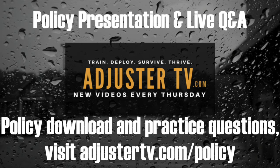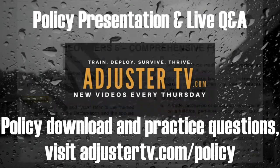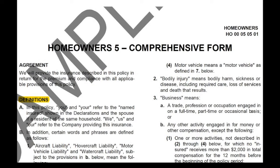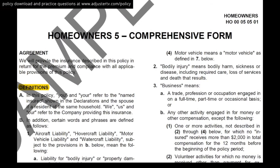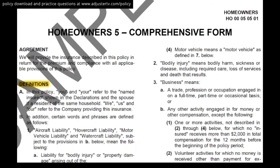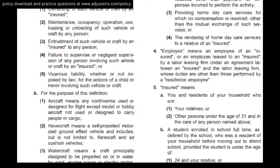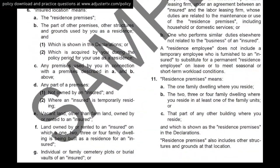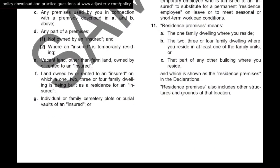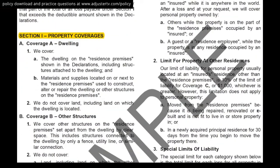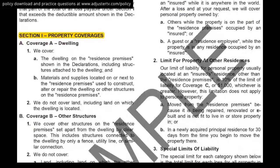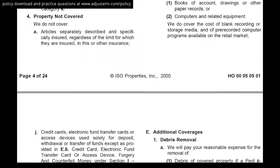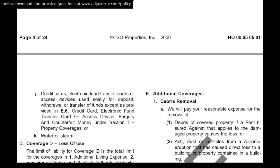Just give me a quick thumbs up in the comments to confirm you can hear and see me. We're going to break down the homeowner's policy and go over just the main parts that will concern you as a cat adjuster. This is the HO5 — a replacement cost policy for the most part. The main parts we'll cover start on the first page with definitions, then property coverages — where you'll find stuff about your dwelling, other structures, personal property, additional living expense, special limits of liability — and we'll hit loss of use as well.